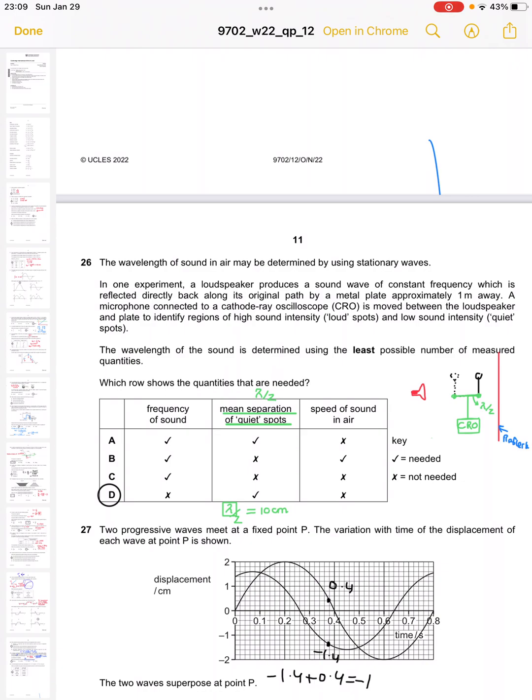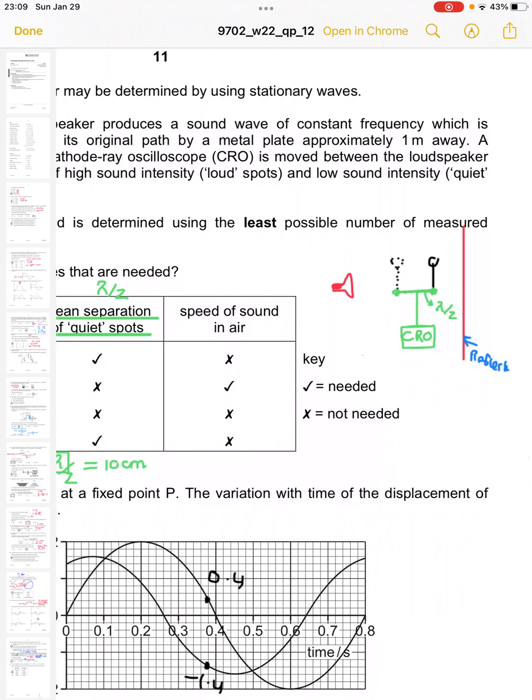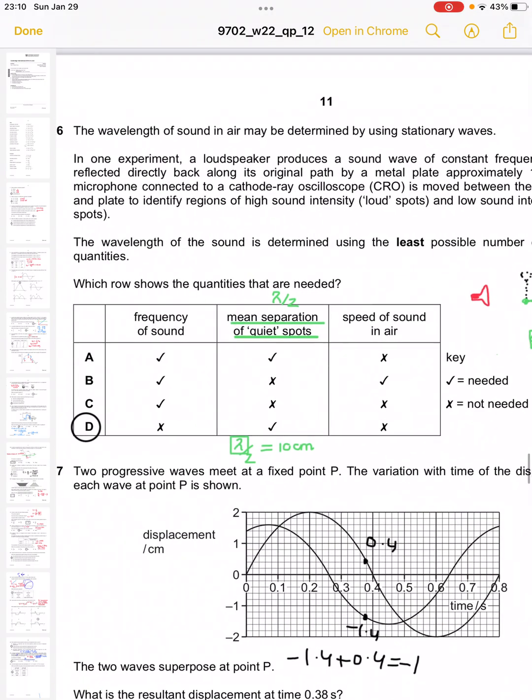For the determination, we need to know regarding the distance of loud sounds that can be measured by the frequency or can be measured by the separation. We just need to know regarding the separation of the quiet spots. The answer is D - the frequency of sound or the separation of sound in air is not required.